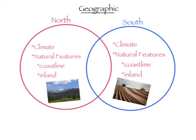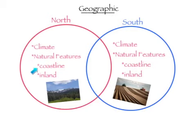Geographic Differences Between the North and the South. The climate in the North has frozen winters and hot, humid summers. The climate in the South has mild winters and long, hot, humid summers. Natural features in the North include a coastline with bays and harbors supporting fishermen and shipbuilding. In the South, the coastline has swamps and marshes with rice, sugarcane, and fishing.